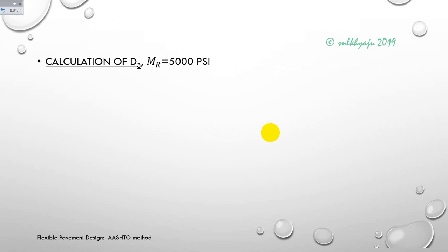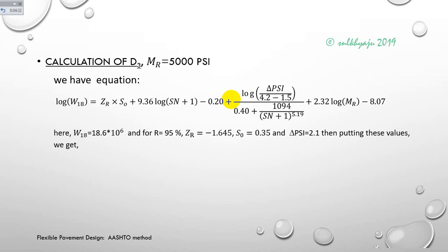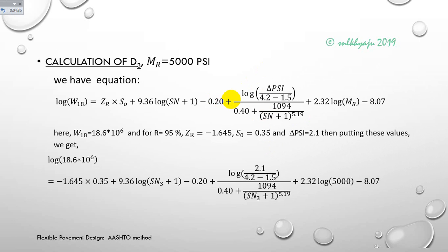For the calculation of d3 — the subbase course thickness — we use the MR of the subgrade, which is 5,000 psi. Using the AASHTO equation and inputting the different design parameters, we solve the equation and determine structural number SN3 = 5.377.